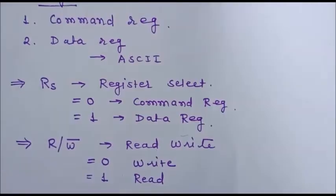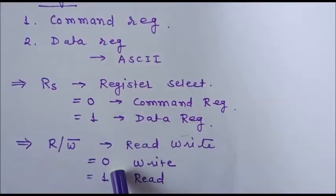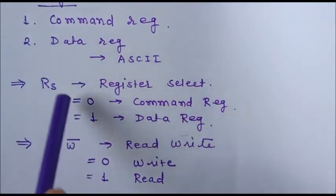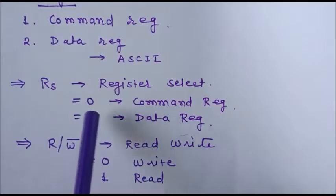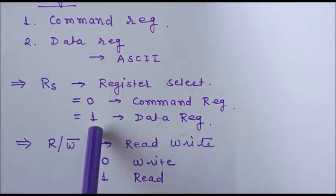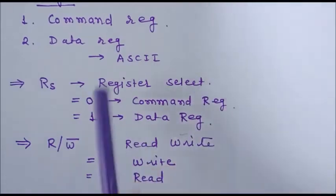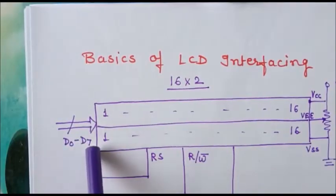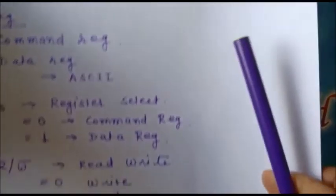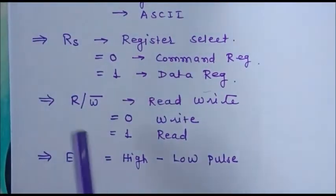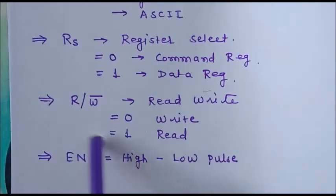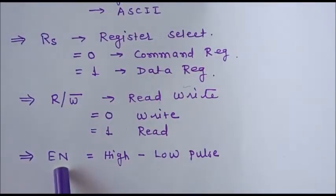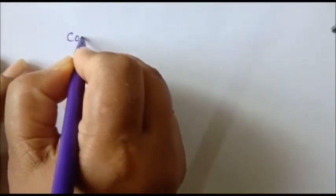To write a program for LCD interfacing, first we select the command register or data register using RS (0 for command, 1 for data). After selecting the register, we place data or command on the data bus D0 to D7. Then we select the write or read operation, and finally we latch the data or command by sending a high-to-low pulse on the Enable terminal.